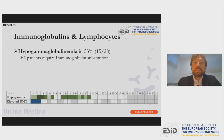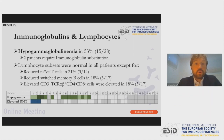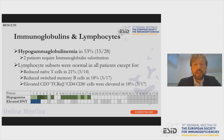Hypogammaglobulinemia was present in almost half of patients but was usually not severe, being either an isolated IgA deficiency or mild reduction in IgG levels, so only two patients required immunoglobulin substitution. Lymphocyte subsets were mostly normal among all patients, except for some with reduced naive T cells, some with reduced switch memory B cells, and most importantly, some patients had elevated double negative T cells — the relevance of which we will see later.